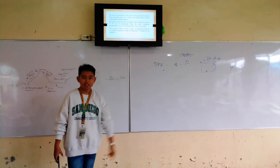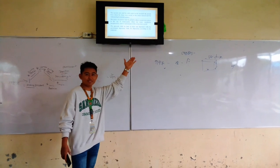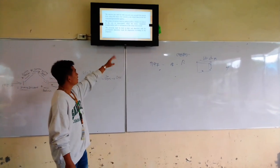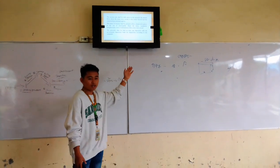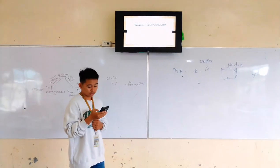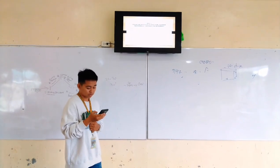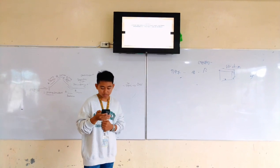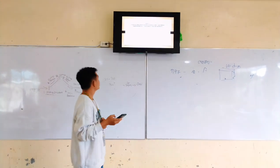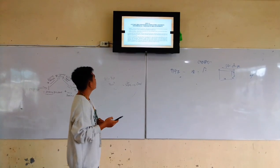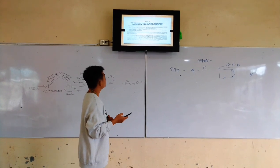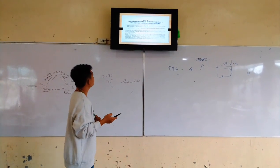If someone involved in the case asks for it, the court can sell the things that were taken through an auction. Before the auction, the court will decide on the minimum price at which the items can be sold based on the advice of the government agency involved. The auction will be conducted by the sheriff or someone authorized by the court.